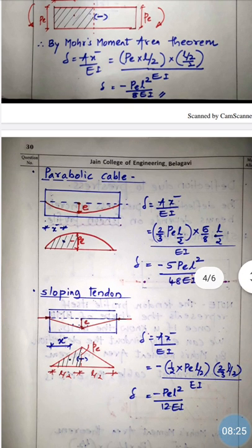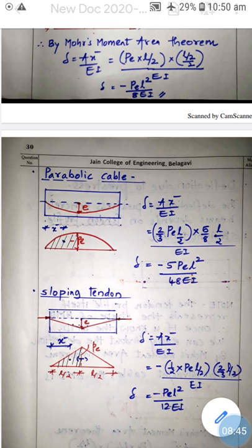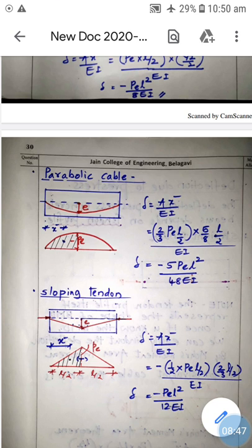For a parabolic cable, the bending moment diagram is parabolic. Again using δ = AX̄ / EI: the area of half the parabolic BMD = (2/3) × Pe × (L/2). The centroid distance = (5/8) × (L/2). After calculation: δ = 5PeL² / 48EI, which is an upward deflection.